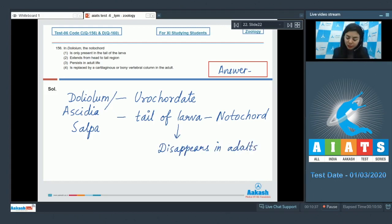Whereas in cephalochordates, the notochord extends throughout the body, that is head to tail region, and it persists throughout life. And this notochord in vertebrates is replaced by a cartilaginous or bony vertebral column in the adults. So option one, that it is present only in the tail of larva, is correct. Whereas extends from head to tail region, persists in adult life, and is replaced by cartilaginous or bony vertebral column, these are features of cephalochordates. The right answer is option number one.